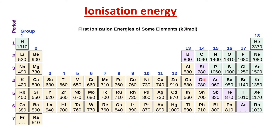Across a period, as atomic size decreases, ionization energy should increase. Beryllium has higher ionization energy than lithium due to decreased size. However, boron has lower ionization energy than beryllium — an exception. From boron to nitrogen, ionization energy increases again with decreasing size, but from nitrogen to oxygen there is another dip. So there is not a perfectly smooth trend across a period — let's examine why.